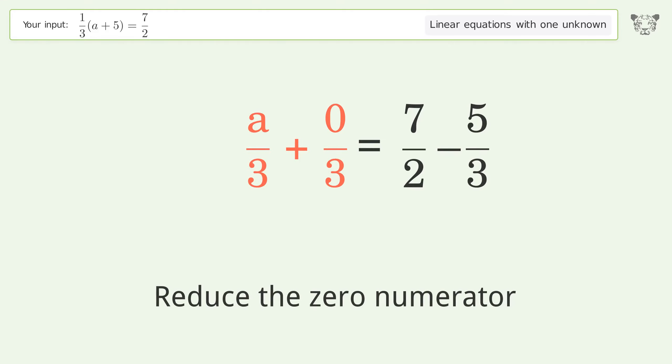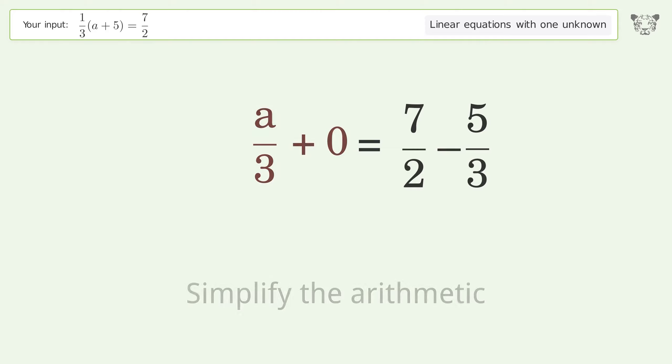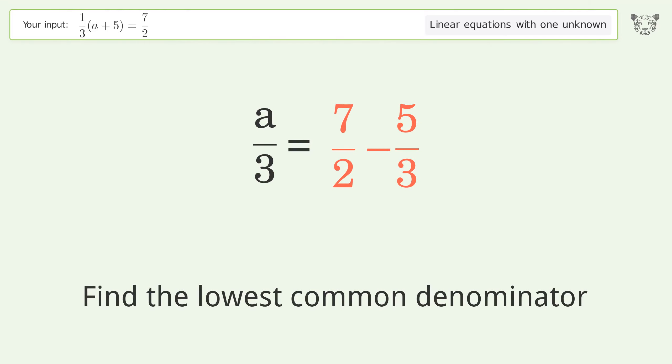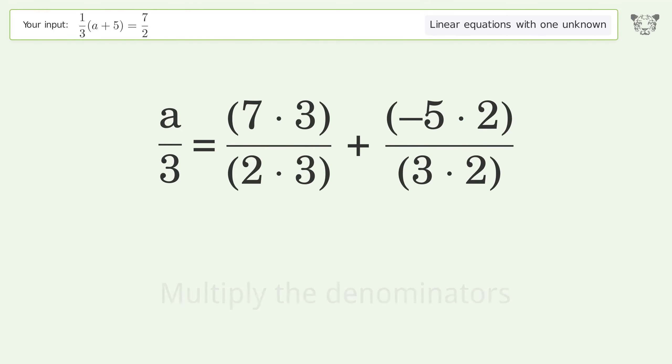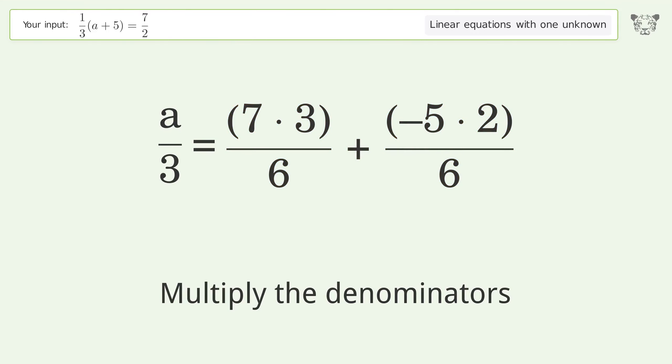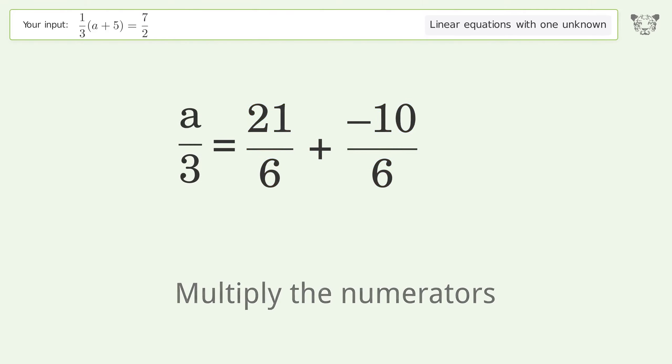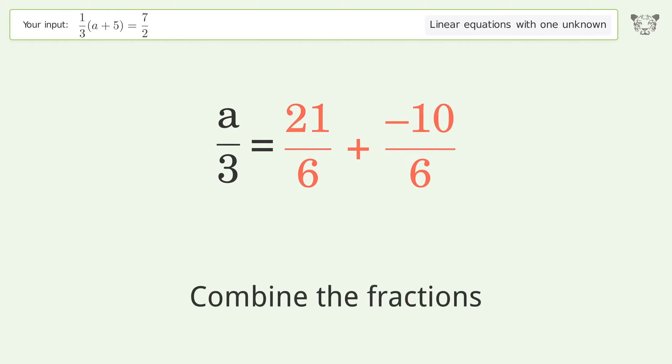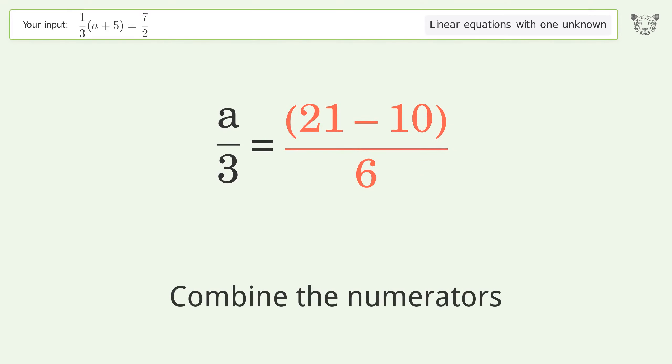Reduce the zero numerator. Simplify the arithmetic. Find the lowest common denominator. Multiply the denominators. Multiply the numerators. Combine the fractions. Combine the numerators.